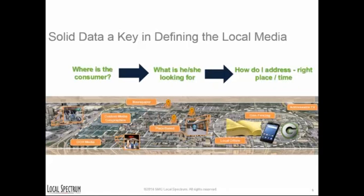The three key components are: Geography — where is the consumer? Categories — what is he or she looking for? And Timing — how do I address the right place and time? We use client-provided KPIs and data, location information, budgets, custom provided discounts, and several proprietary zip code level data points.